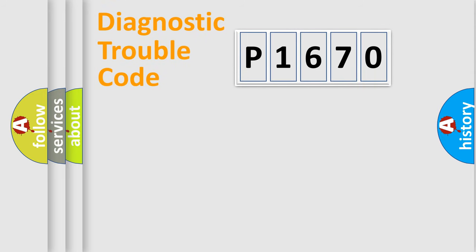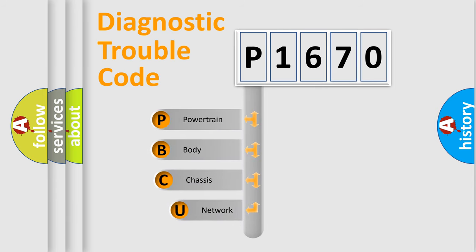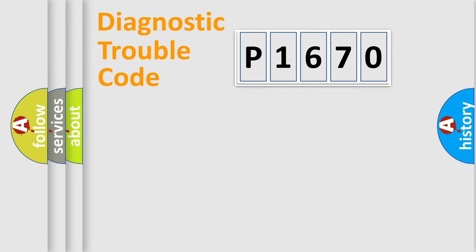Let's do this. First, let's look at the history of diagnostic fault code composition according to the OBD2 protocol, which is unified for all automakers since 2000. We divide the electric system of an automobile into four basic units: Powertrain, Body, Chassis, and Network.